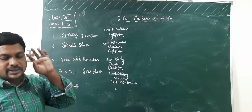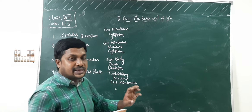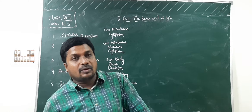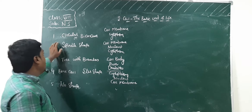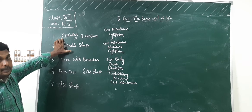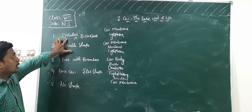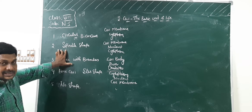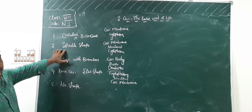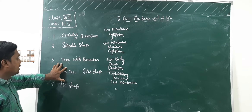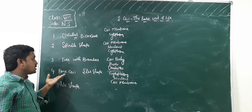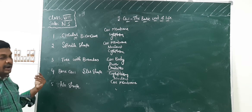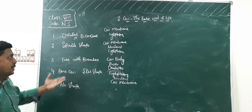So here, five cells are given to you: RBC, muscle cells, nerve cells, bone cells, and white blood cells. If you observe: RBC — red blood cells — circular and biconcave shape. Muscle cells — spindle shape, already explained in previous class. Nerve cells — tree with branches. Bone cells — star shape. White blood cells — do not have a particular shape.